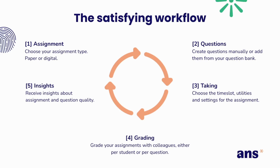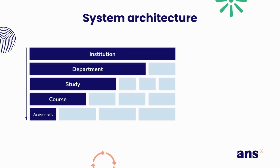Now we will dive into the system architecture and the way the platform is structured. Here you can see how the system is built up. At the top we have the institution, also known as the school or the university. One level below we have the departments, also known as faculties or academies. To organize and structure the courses within the departments, we have added the layer study. At the bottom we have the assignments, which are always part of a course.